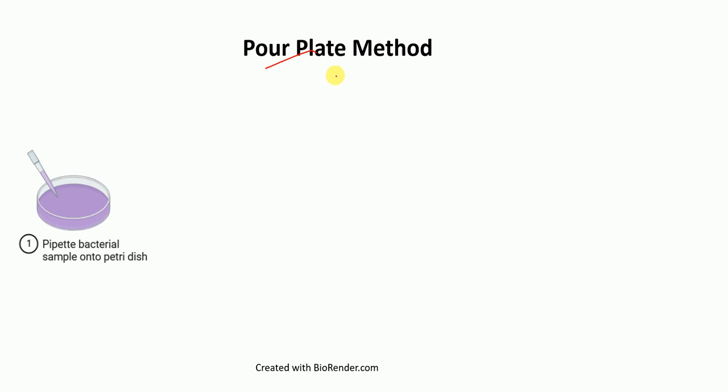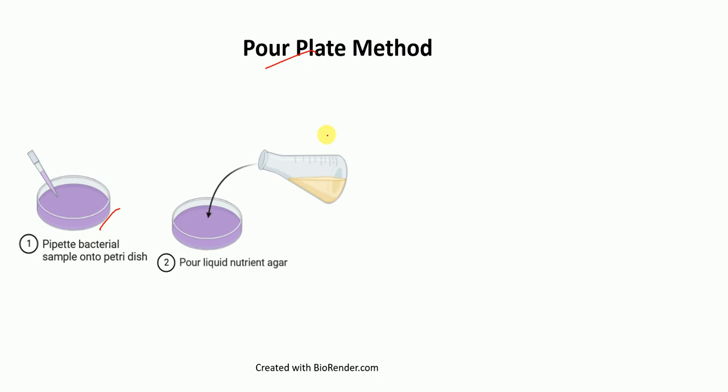As the name suggests, in this method we pour the media. In the first step, we pipette the bacterial sample onto the petri dish. In the next step, we pour the liquid media into the plate. And in the third step, we swirl it to mix.